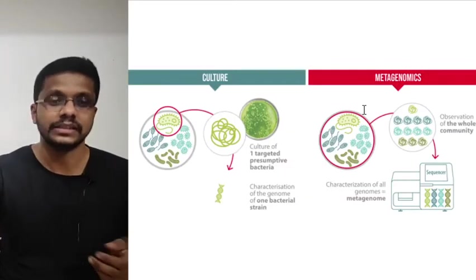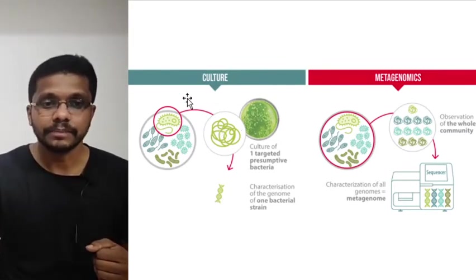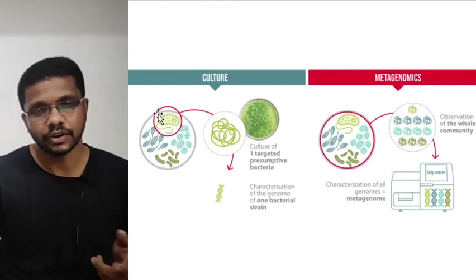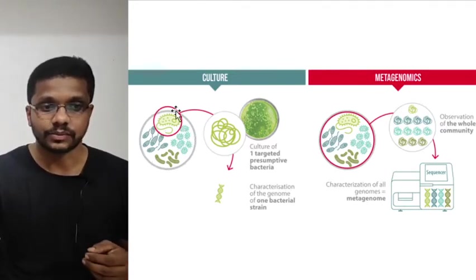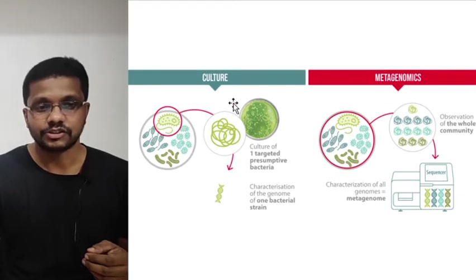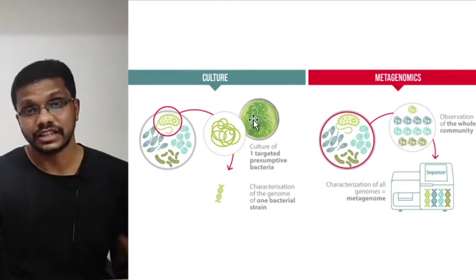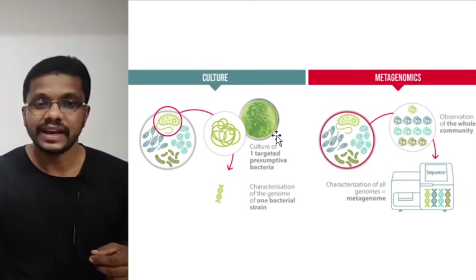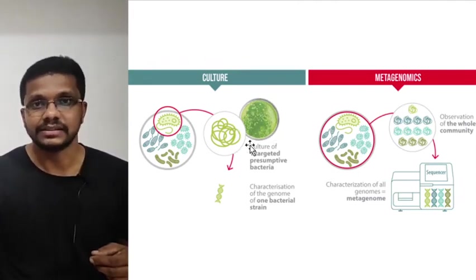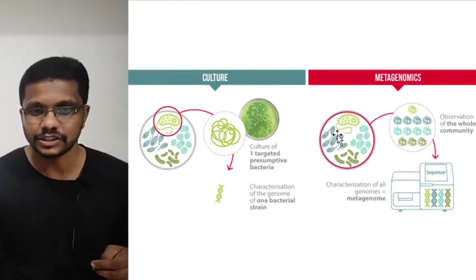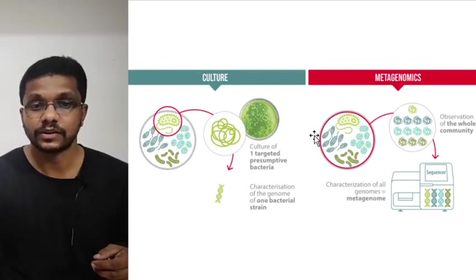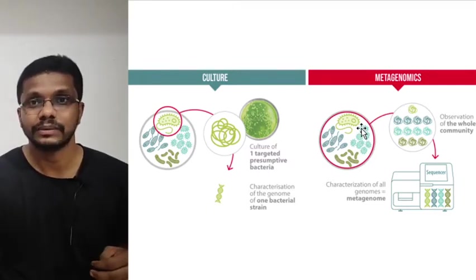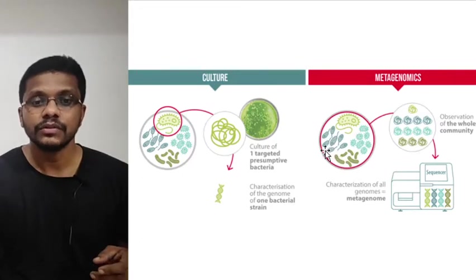Metagenomics aims to find industrially important genes and proteins from unculturable microorganisms. In the traditional culture technique, we take a sample from the environment, which contains different types of microorganisms, make a pure culture using streak plate or spread plate techniques, and then characterize the genome of that organism. But in metagenomics, most of these microorganisms cannot be cultured — quantitatively, 99% of them cannot be cultured.